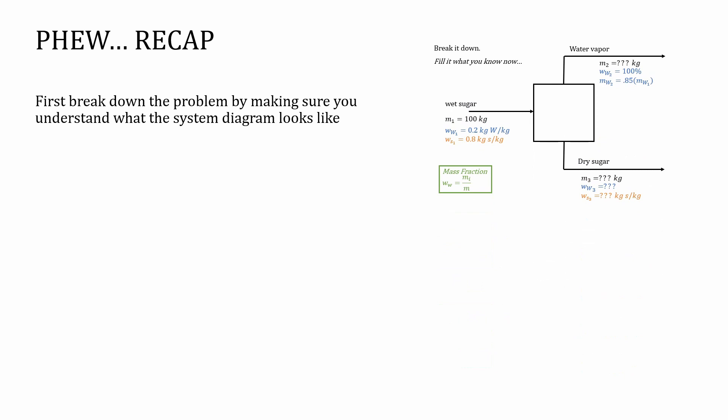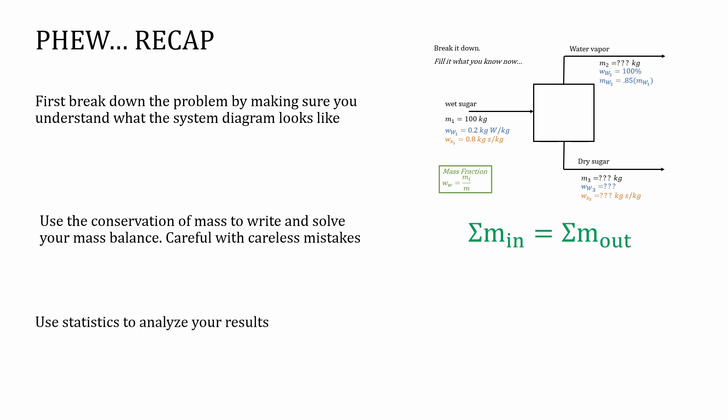The first thing to do is, when you see a big problem like this, is break it down, and make sure you really understand what the system diagram looks like. The next thing to do is use the conservation of mass to write and solve your mass balance. Be careful with those careless and pesky mistakes, especially on your calculator. When in doubt, n equals out. And then we use statistics to analyze the results. We learn the definition for standard deviation, and the mean, and we use Excel to answer our questions.